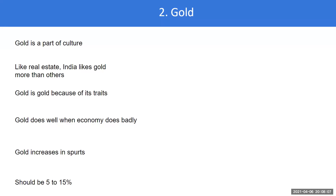Gold increases in spurts — it stays steady or stagnant for years and then shoots up in a few years. As part of your portfolio, if you have one crore, the proportion of gold should be 5 to 15% — anywhere between 5 lakhs to 15 lakhs. This includes all money in sovereign gold bonds, gold mutual funds, gold ETFs, and gold jewelry combined. We have dealt with real estate and gold. In the next session, we will talk about equity, cash, and fixed income — which are slightly more complicated and have their own different asset class categories.